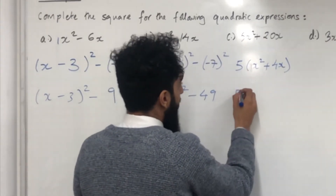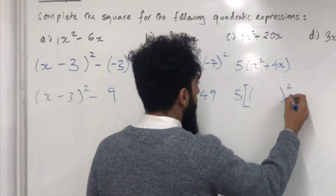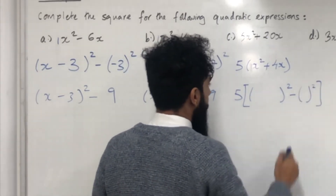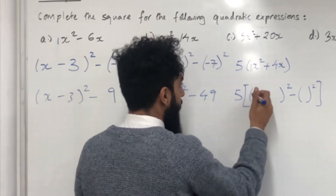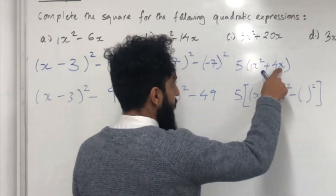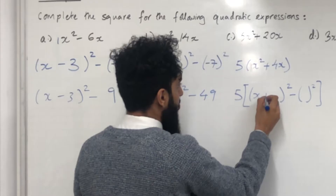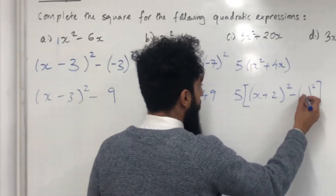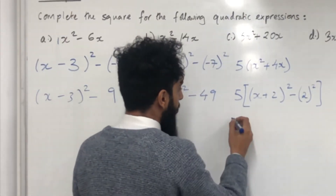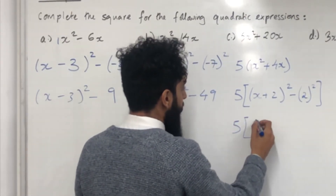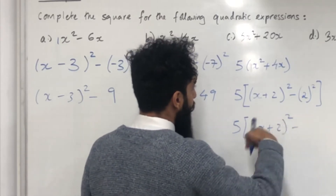We put 5 with a square bracket, then bracket squared minus bracket squared, then close the square bracket. We stick in x, take the coefficient of x inside the bracket which is positive 4, half it giving positive 2, and put positive 2 in both places. Cleaning up gives 5[(x + 2)² − 2 squared, which is 4].